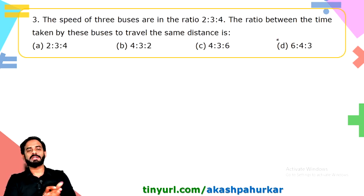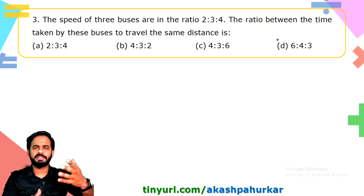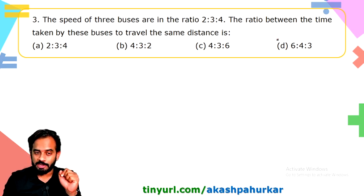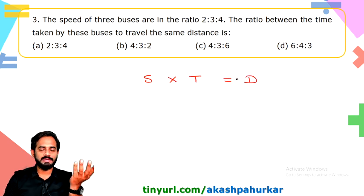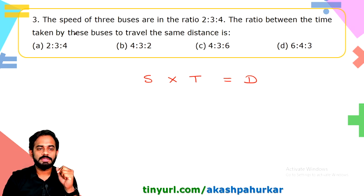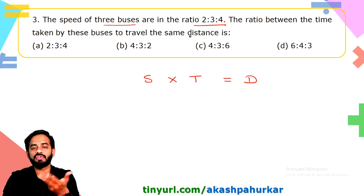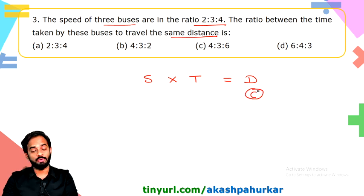The third question is based on time, speed, and distance. The key equation is speed × time = distance. The speeds of three buses are in the ratio 2:3:4. We need the ratio of time taken by these buses to travel the same distance. Remember: whenever distance is constant, speed and time are inversely proportional.